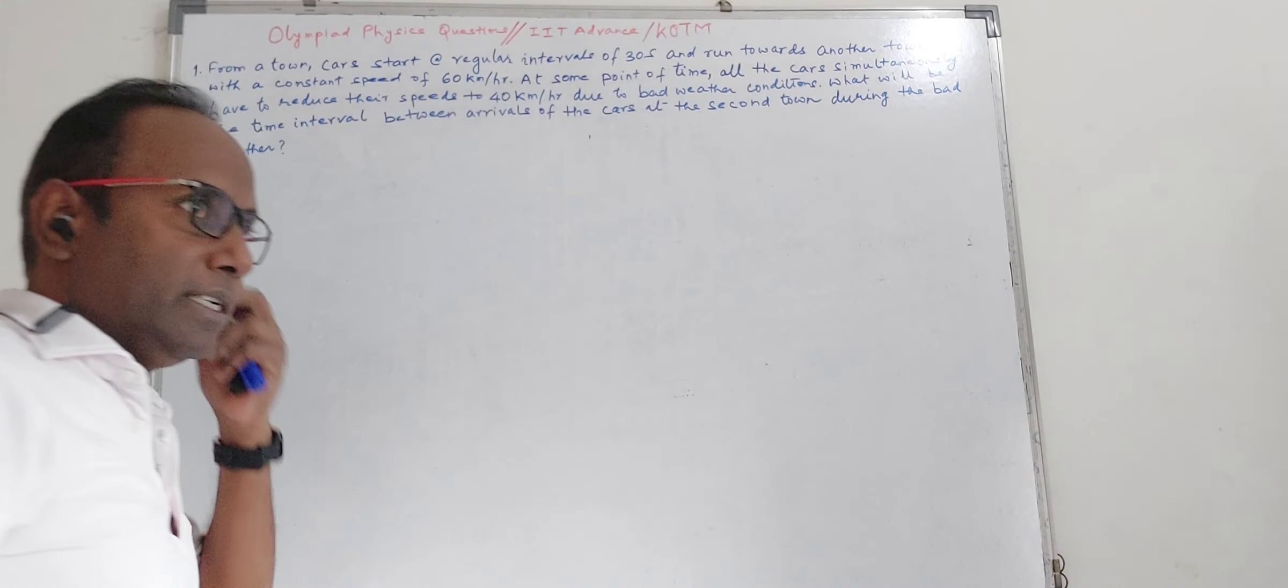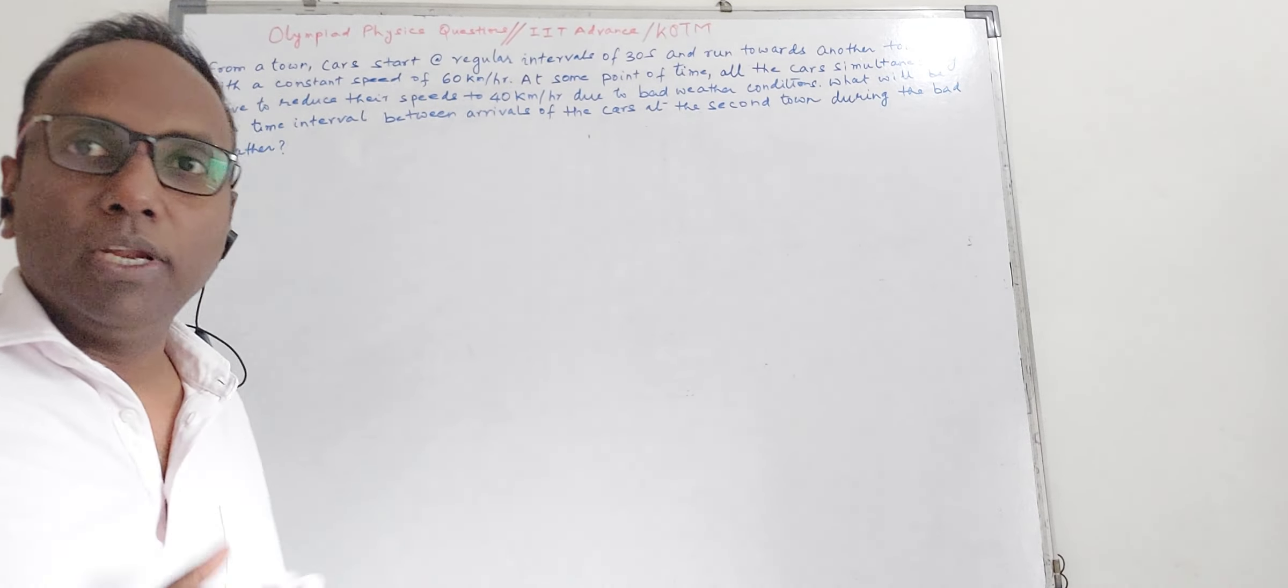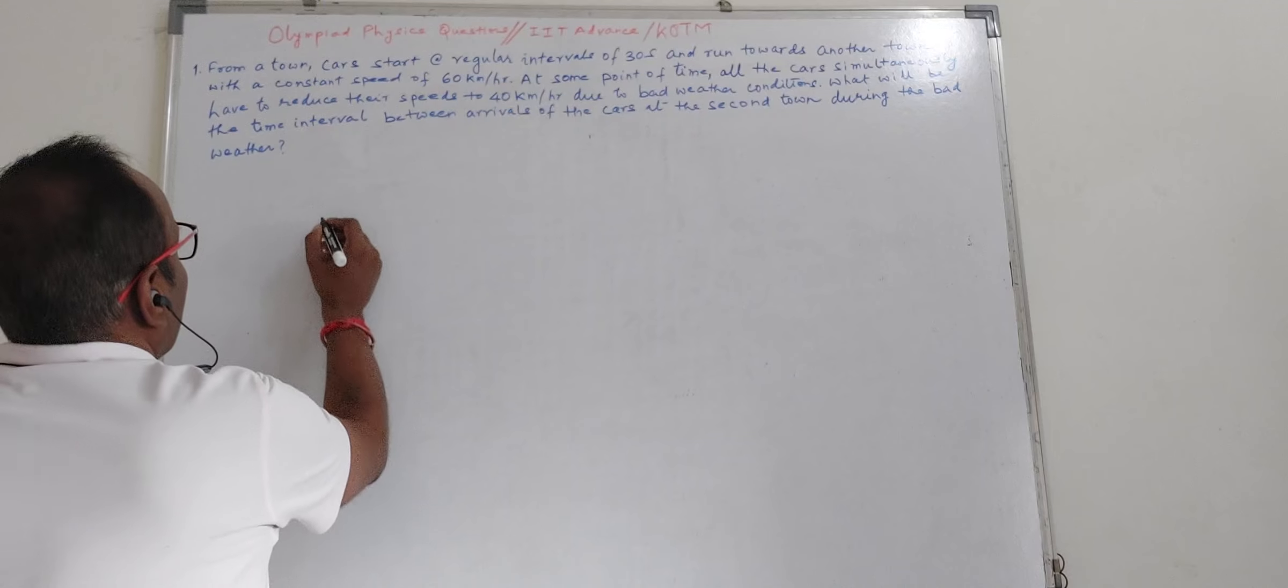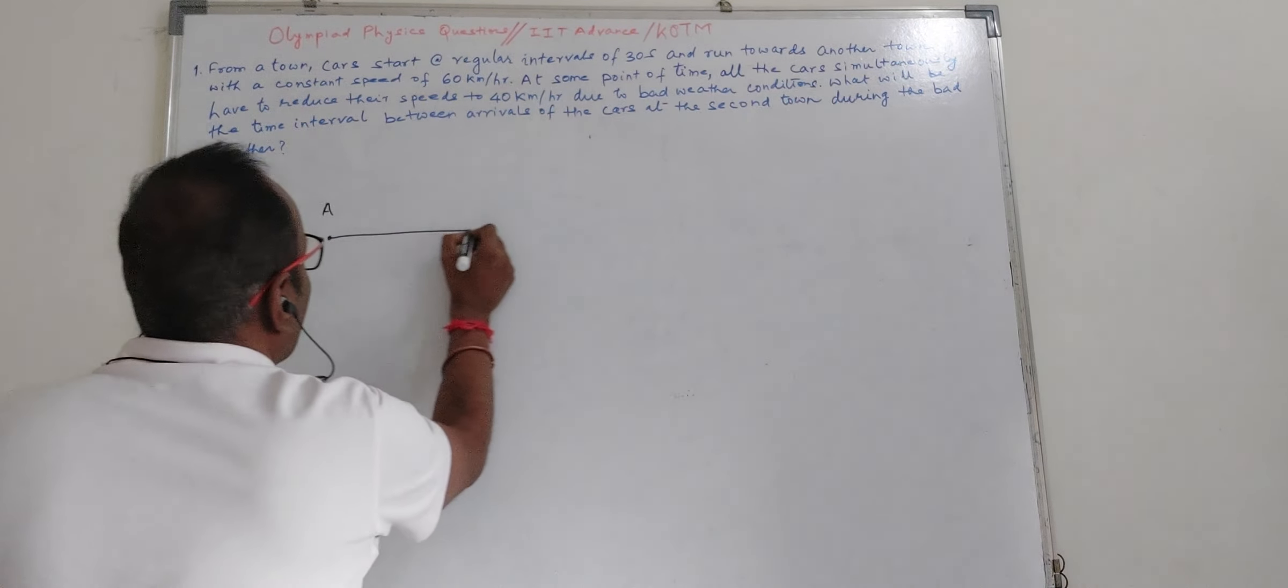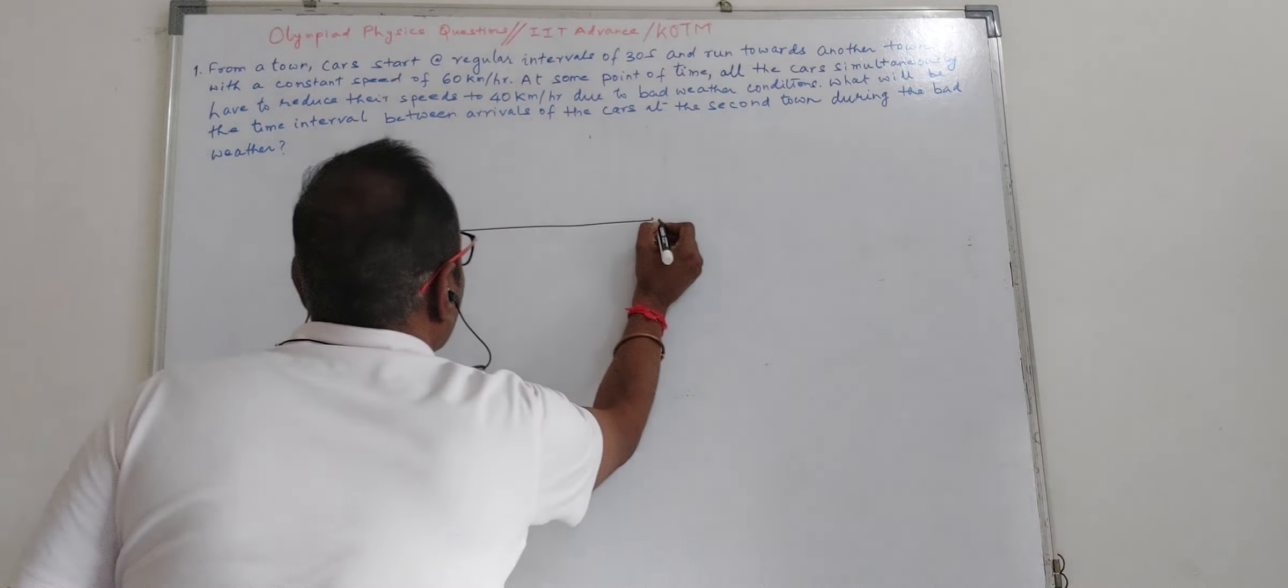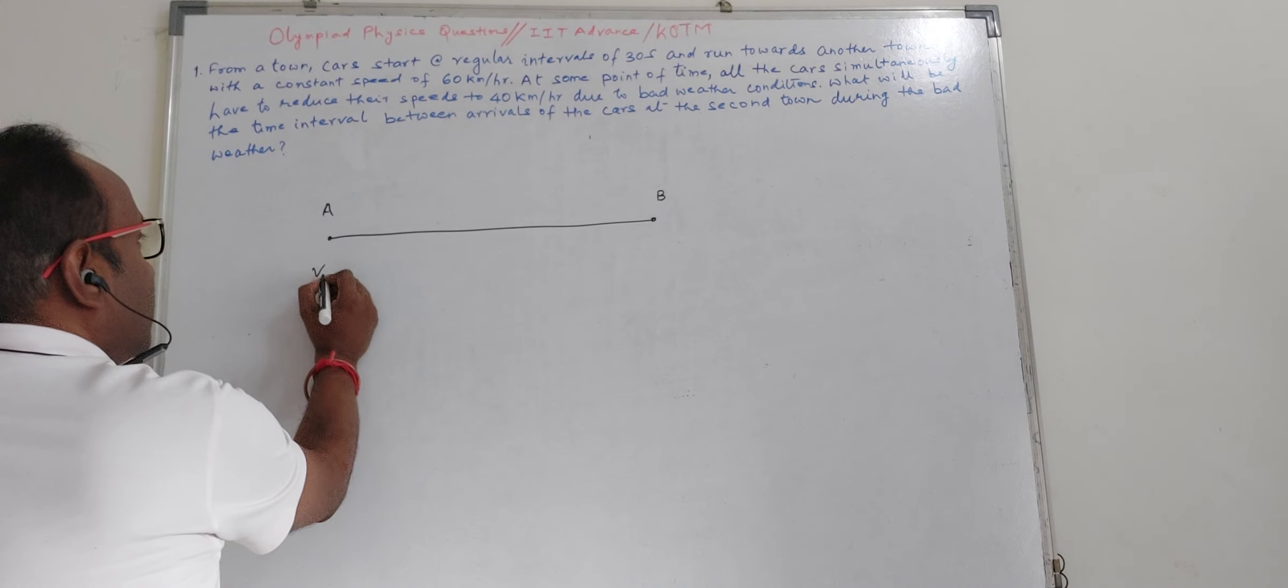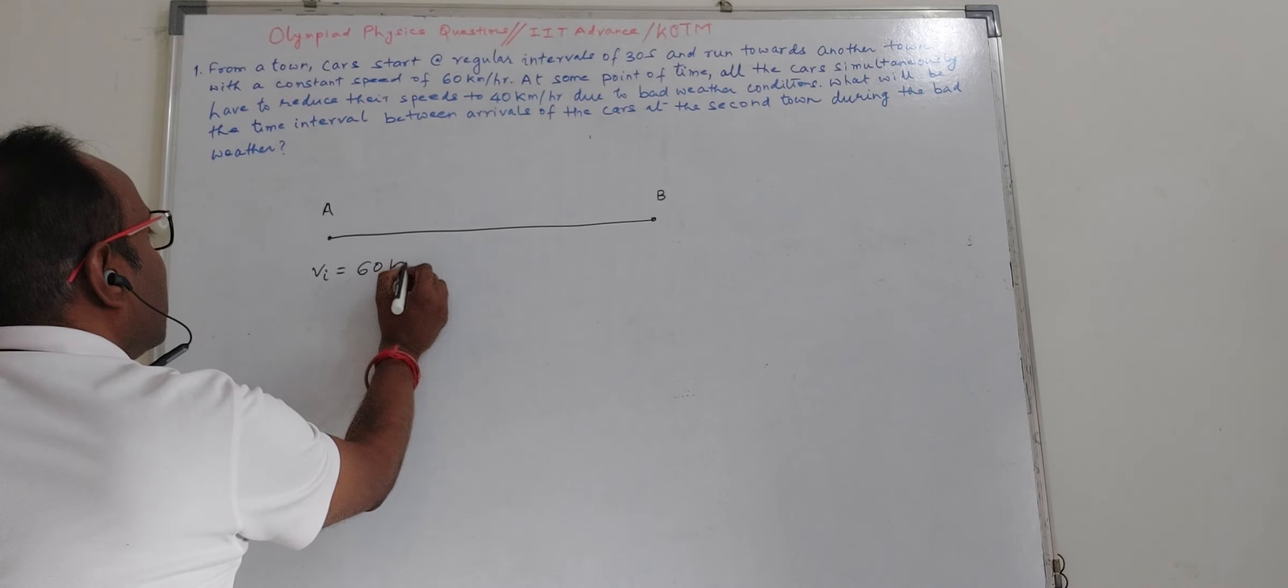In this question, what is given? There are two towns. If town A is here and the second town is B, all the cars are moving from A to B with an initial speed of 60 km per hour.